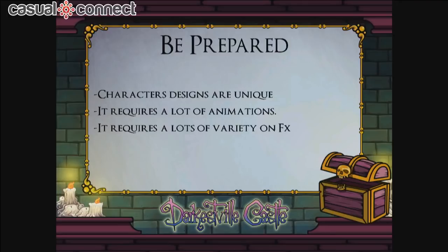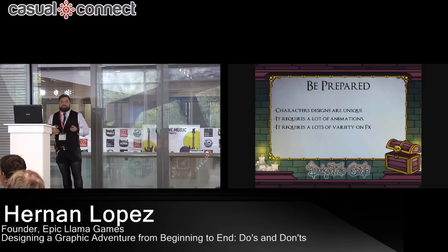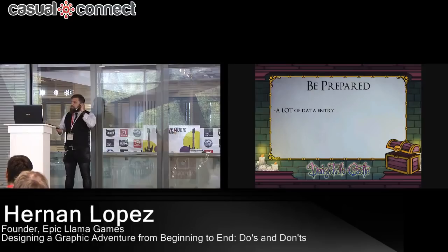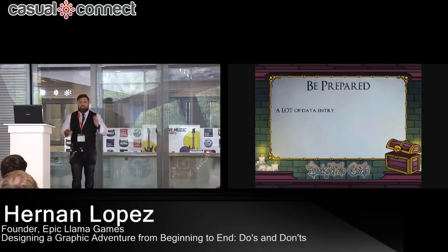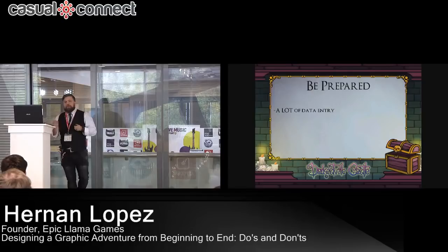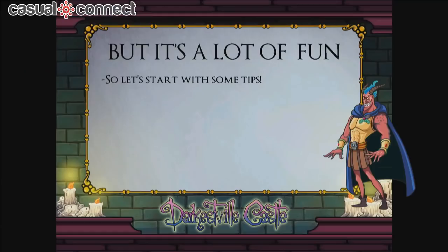Character designs are unique. It's not like you make an enemy and just repeat it a trillion times — here every character is unique. It requires a lot of animation and a lot of variety in effects. Our game has 4,900 lines of dialogue — that's 4,900 lines of code to copy and paste, and 4,000 sound files to put in. It's a lot of work, but it's a lot of fun. Let's go with the tips you'll need to make this game.